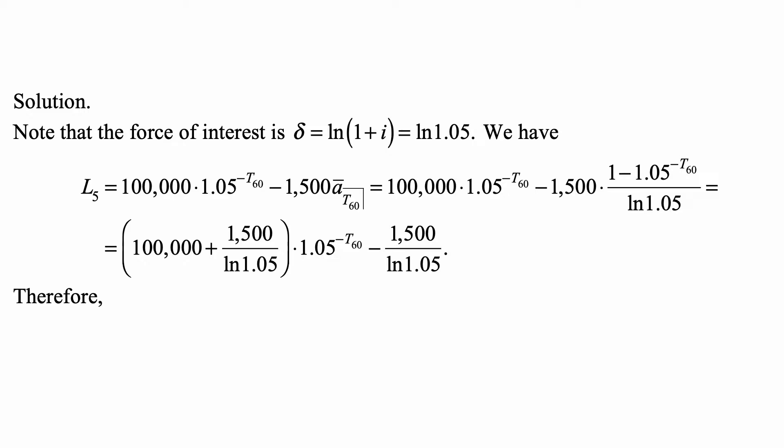L₅ equals 100,000 times the present value factor for a death at T₆₀ years in the future minus 1,500 times a-bar-angle-T₆₀, because that's how long the premium is paid in continuous mode.